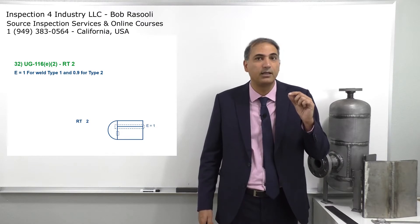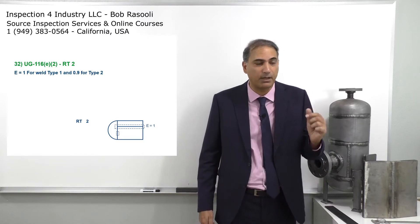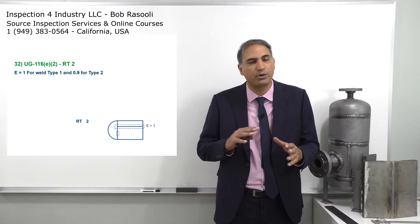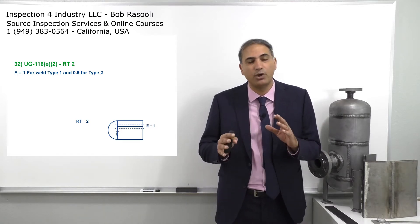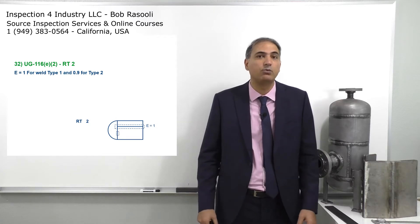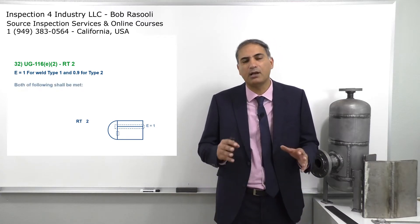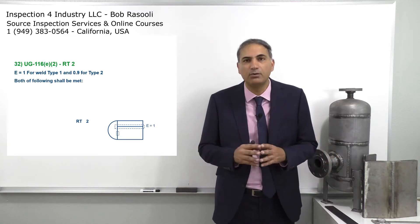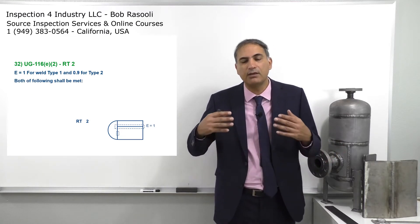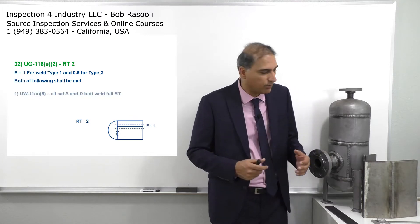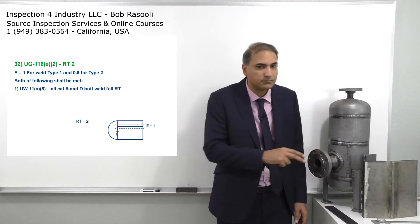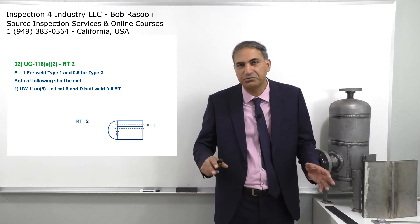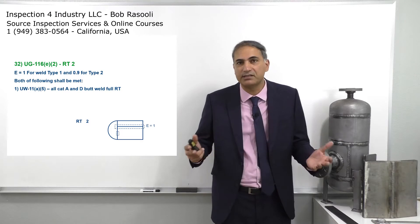Joint efficiency is 1.0 for weld type number one and 0.9 for weld type number two — almost identical with RT1 from a joint efficiency point of view. The concept is that it's a bonus the code gives to the manufacturer. So assume I have a pressure vessel where the wall thickness is half inch, it's 516 grade 70.